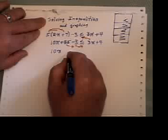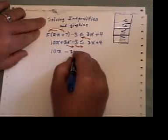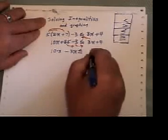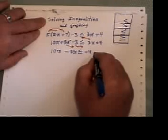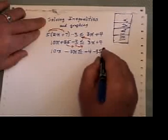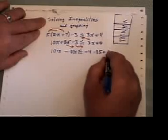Now, I'll have 10x minus 3x here. And over here, I'll have the plus four, I'll have a minus thirty-five because it's changed signs, and I'll have a plus three.